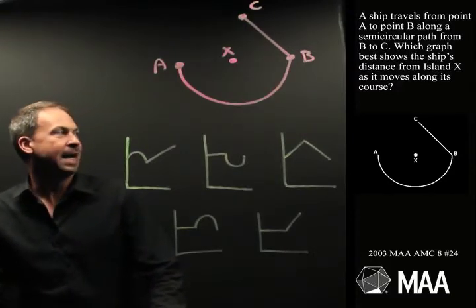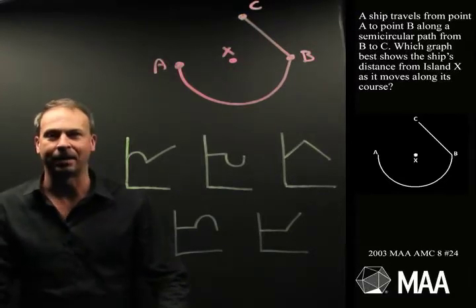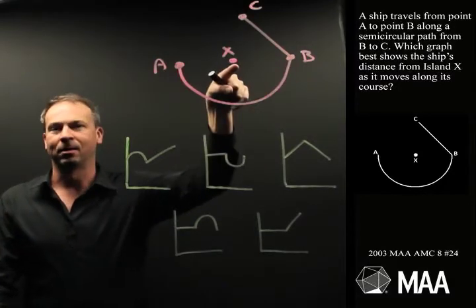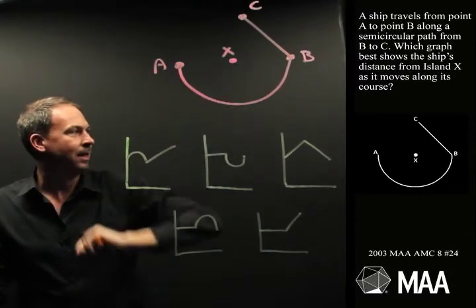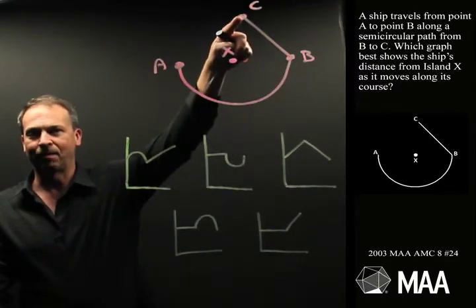A ship travels from point A to point B along a semicircular path centered at island X. So, going from A to B on a semicircle about this island X. Then it travels along a straight path from B to C, straight path.